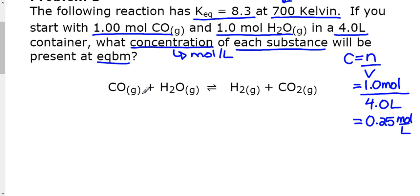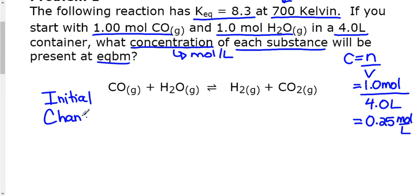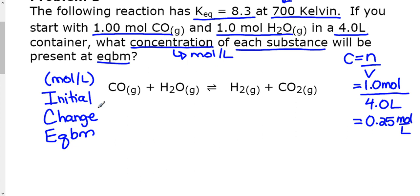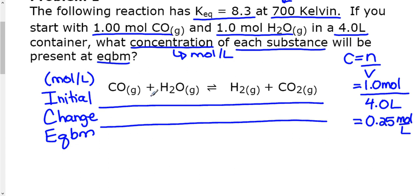Equilibrium problems are a little different because you have the forward reaction and the reverse reaction — you have to consider both ways. We use something called an ICE table. ICE is an acronym: I stands for Initial, C stands for Change, and E stands for Equilibrium — all referring to concentration in moles per liter. You can just write I, C, E and go from there, making a table subdivided based on reactants and products.